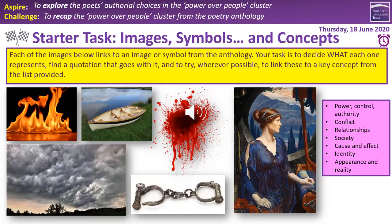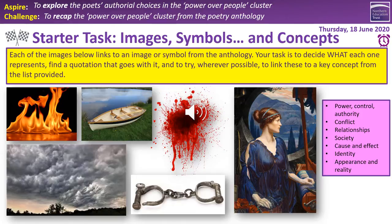If you can provide a quotation from the poems you're referencing, so much the better. For example, those metal braces in the middle at the bottom — those are manacles. The obvious quotation is 'the mind-forged manacles' from Blake's London, which we looked at in our last session. In terms of concepts, that links to power, control, and authority, definitely society, and possibly identity.